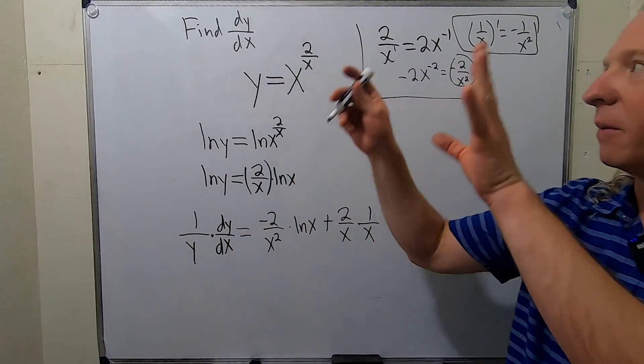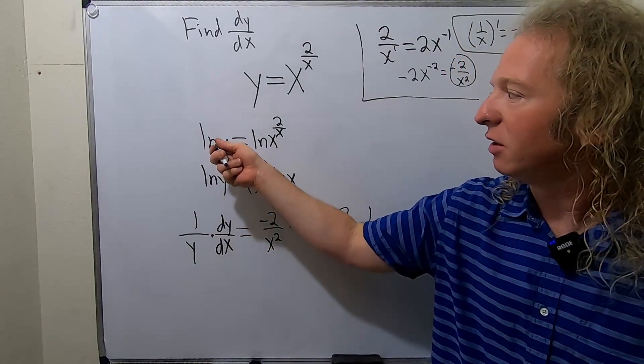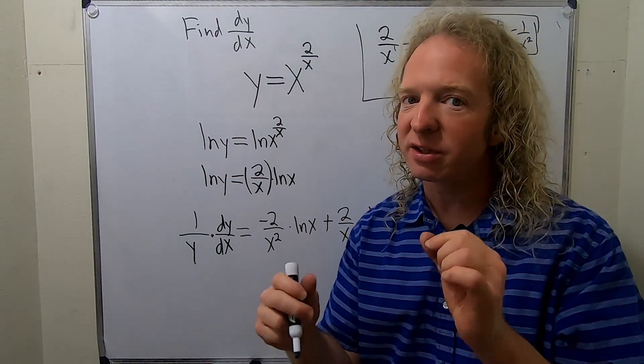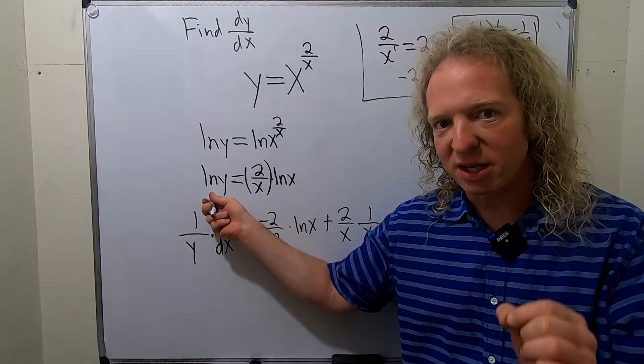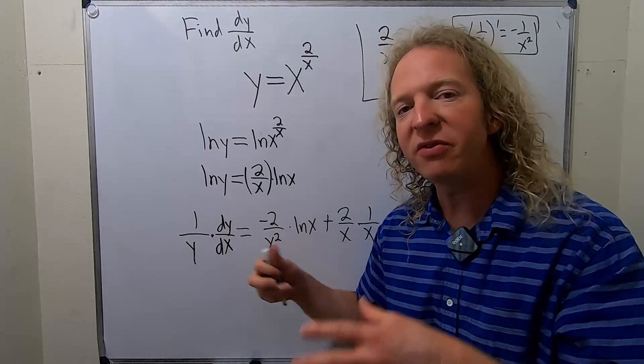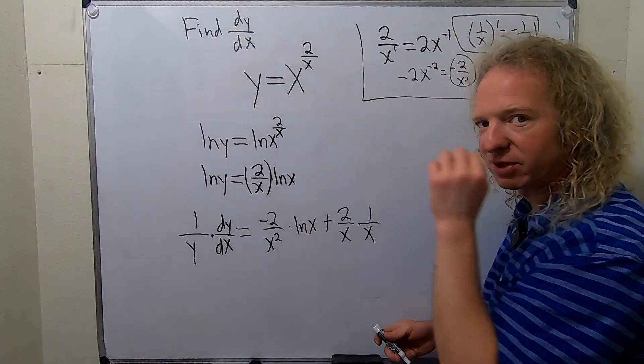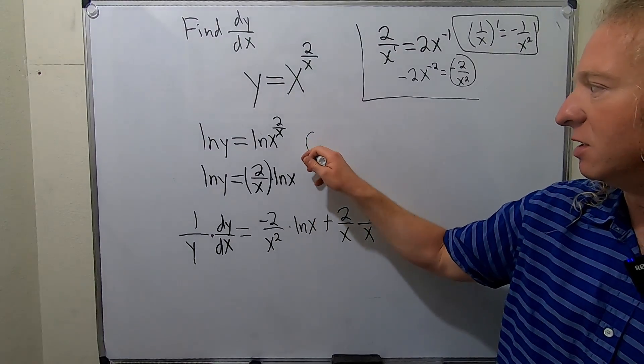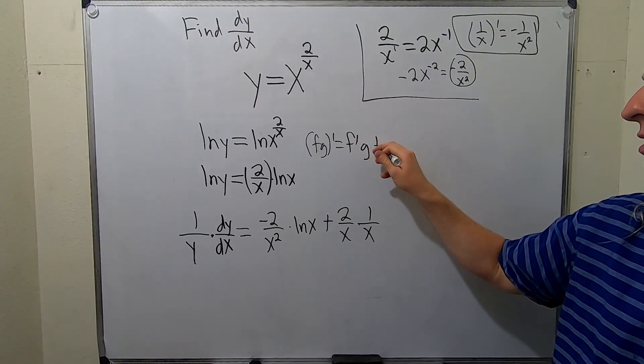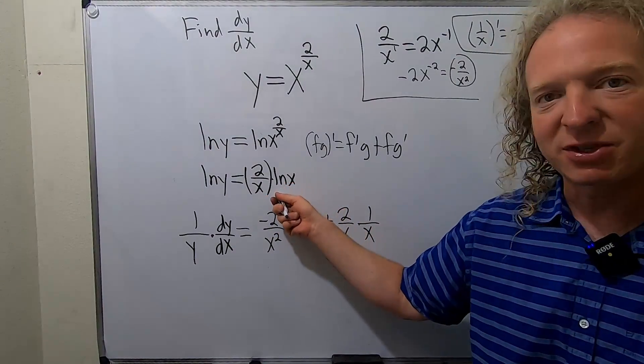Let's go over that from the beginning. The problem says use logarithmic differentiation, so take the natural log of both sides. Then bring it down using the power rule. Then take the derivative with respect to x. The derivative of ln y is 1 over y times dy/dx. Here we use the product rule: derivative of the first times the second plus the first times the derivative of the second.